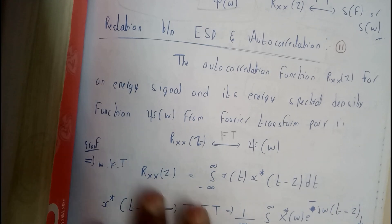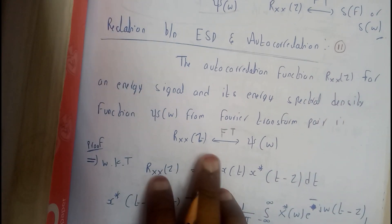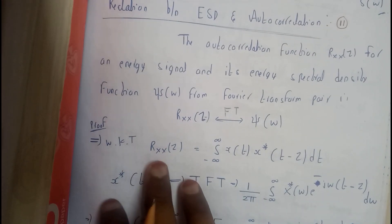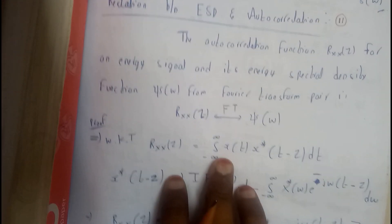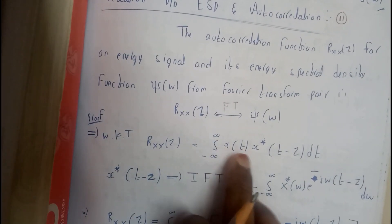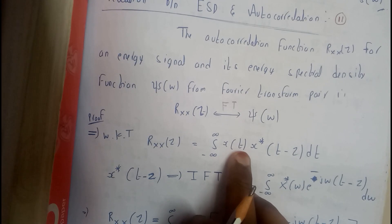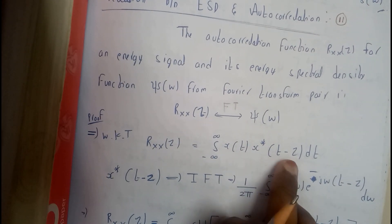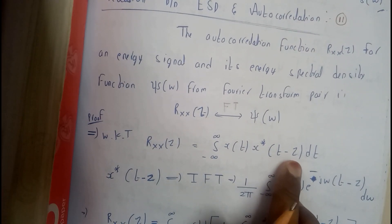So now let us prove this. We know that Rxx of Z is nothing but the integral from minus infinity to infinity of X(T) times X conjugate of T minus Z, into dT.